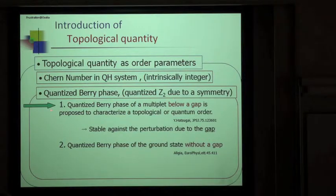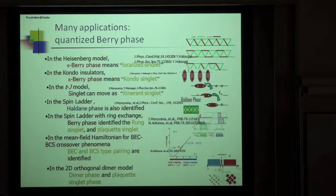There are two ways to use a quantized Berry phase. The difference is whether we use a gap or not. In our approach, we use a gap because the result of the quantized Berry phase is stable against the perturbation due to this gap, which means topologically protected.